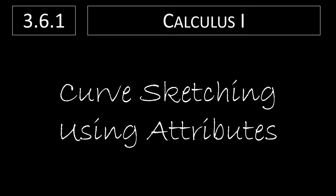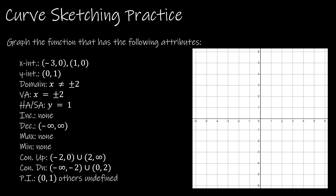Everything in Chapter 3 to this point has given us an idea of different attributes of our function based on the derivative and second derivative. In this video, I'm going to give you those attributes — the asymptotes, the intervals of increase and decrease, the min, the max, etc. — and we're going to sketch the graph based on those attributes. In our next video, 3.6.2, I'll give you the function and we'll do the work to find the attributes first, then sketch the graph. Let's take a look at our first practice.